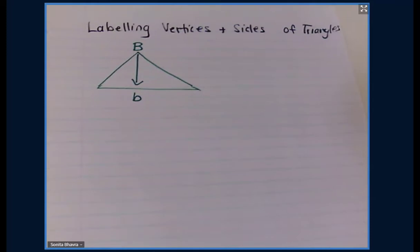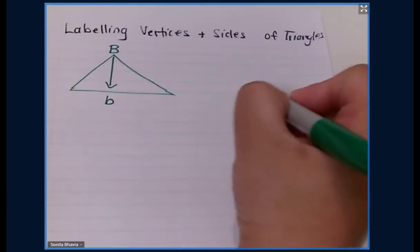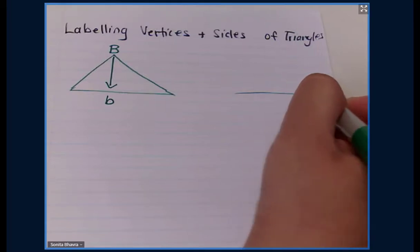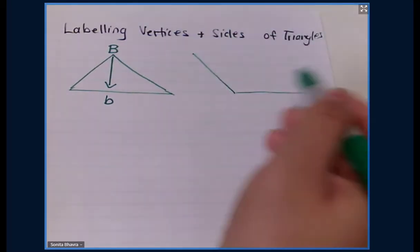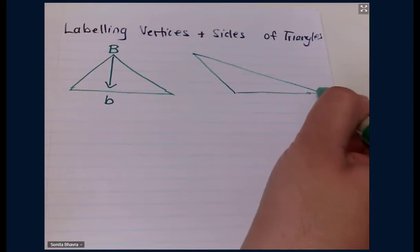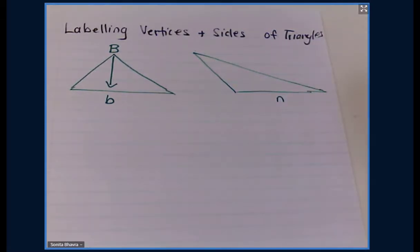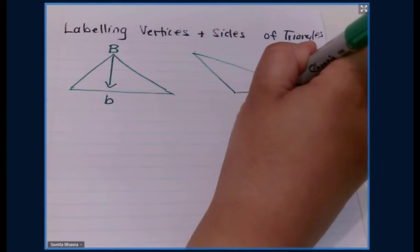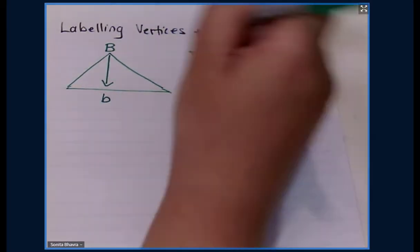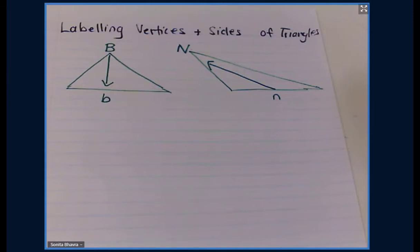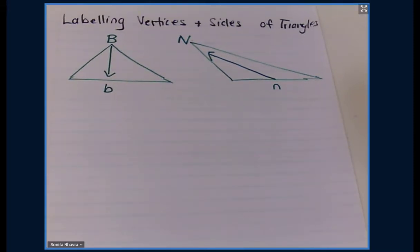The second example: the triangle looks like this. If this is the side n, given in a lowercase letter, that means the angle or vertex opposite it has to be angle N or vertex N in capital. So right opposite that would be this one here, labeled with a capital N.